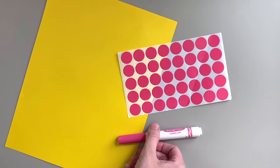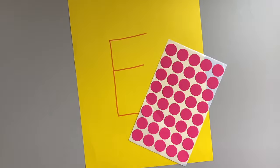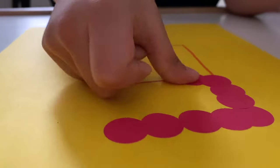Next up is letter tracing with dot stickers. Again, you'll need a piece of paper, dot stickers, and a pen. Just write any letter you want your child to practice and have them trace it with the stickers. This one is great for your child to do independently.